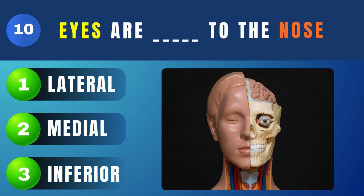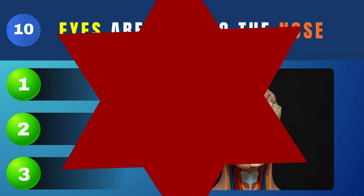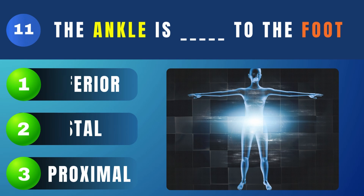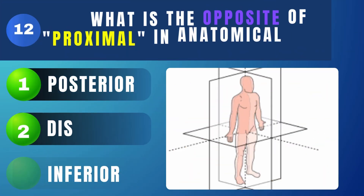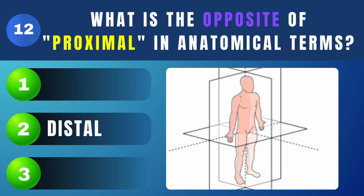Eyes are what to the nose? Lateral. The ankle is what to the foot? Proximal. What is the opposite of proximal in anatomical terms? Distal.